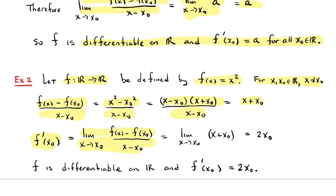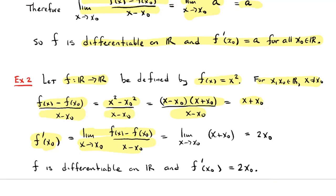The limit as x approaches x₀ does not depend on the value of the function at x₀. So the difference quotient for x ≠ x₀ equals x + x₀, and that limit is just the limit as x approaches x₀ of x + x₀, which by limit laws would be x₀ + x₀ or 2x₀. So once again it's differentiable at any point — it's a differentiable function on the entire real line — and the value of the derivative at x₀ is 2 times x₀.